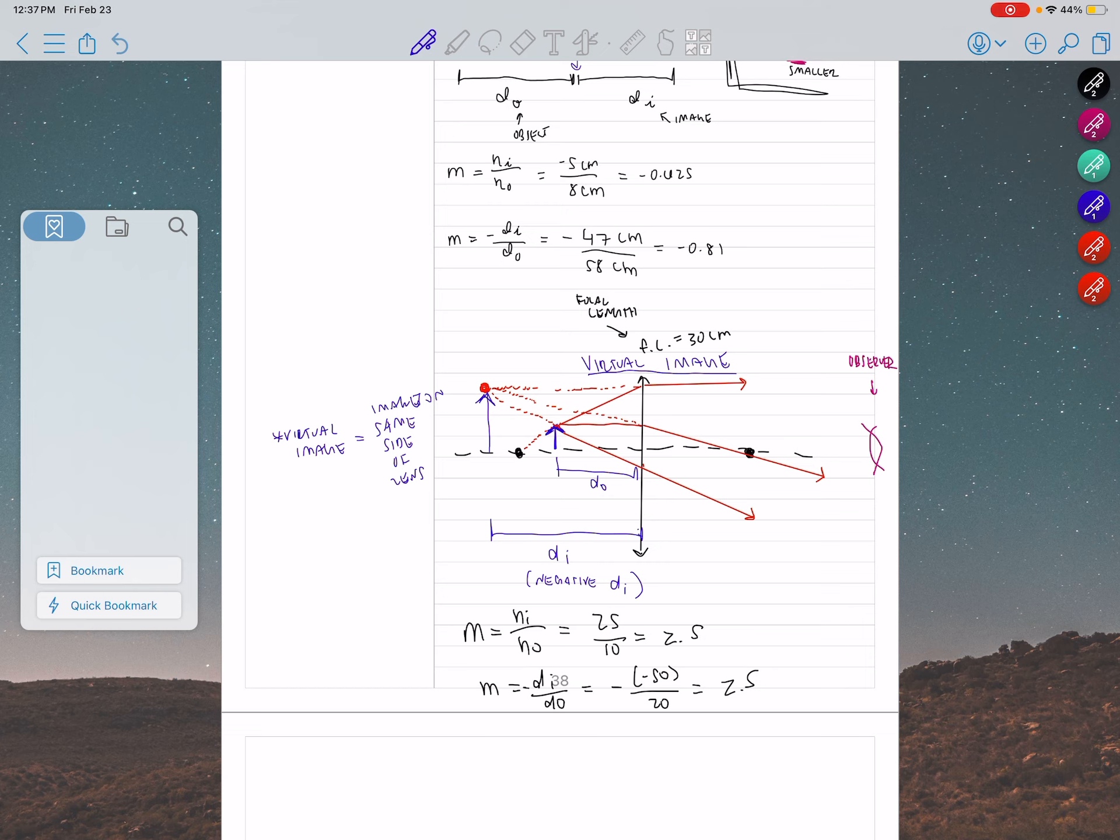Virtual images, you need the eye of an observer to recreate this image. If you don't have this observer here, it doesn't matter where you place the screen, you will never see that image. Your eye is a fundamental part of the optical system to recreate the image. When do we have virtual images? In any optical instrument that you put into your eyes, you're going to have virtual images. Telescopes, microscopes, binoculars. You put your eye, and you need to put your eyes in order to see the image.